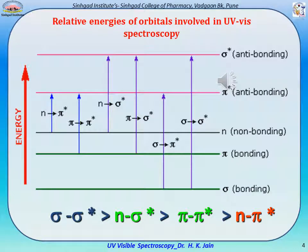The relative energy of orbitals involved in UV-visual spectroscopy is shown in a schematic diagram. There are three bonding orbitals — sigma, pi, and n — and two anti-bonding orbitals — pi* and sigma*. Electrons get excited from bonding orbitals upon absorbing UV energy and jump to higher energy anti-bonding orbitals. The transitions that may occur are sigma→sigma*, pi→pi*, and n→pi*.